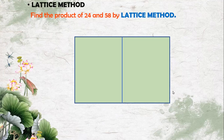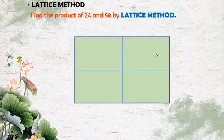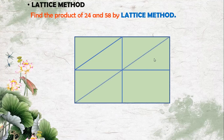Same way, the second number also has two digits, so I will divide this breadth into two parts. The bottom row represents the ones place and the upper row represents the tens place of these two digits. Next, we will divide these squares into triangles. I will divide each square into two triangles diagonally.